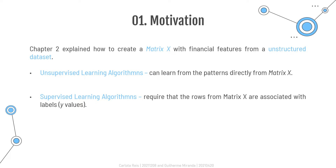The previous chapter of the book explored how to create a feature matrix X with financial features from a raw or unstructured dataset. While an unsupervised learning algorithm can learn from patterns directly extracted from matrix X, supervised learning algorithms require that the rows in matrix X are associated with labels. This is why labeling is needed. In other words, a label is an outcome we want our model to learn.